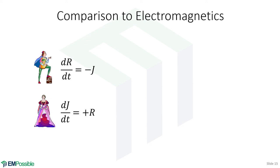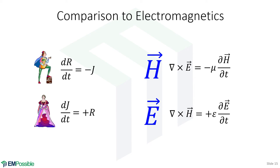Let's compare this to what happens in electromagnetics. Romeo and Juliet started off with governing equations that describe their personality, and it's this sign difference that's the only difference between their two equations — and it's this personality difference that led to this oscillating love story. Well, if we look at electromagnetics, we have a similar love story with the electric and magnetic fields via the two curl equations. Notice these equations look the same except for this sign difference, and it's this personality difference that leads to an oscillation between the magnetic and electric fields. And that's what creates the wave phenomenon.